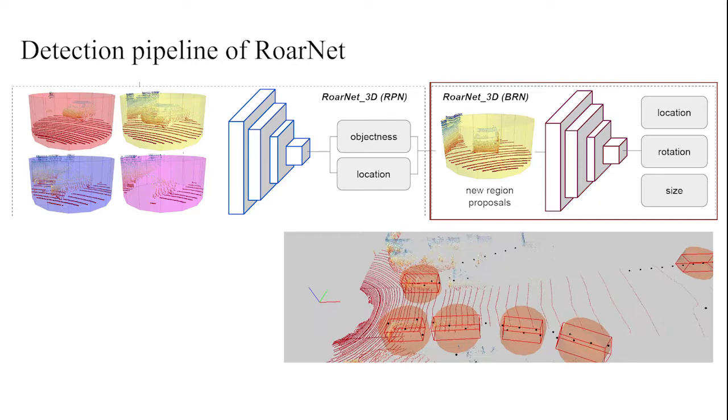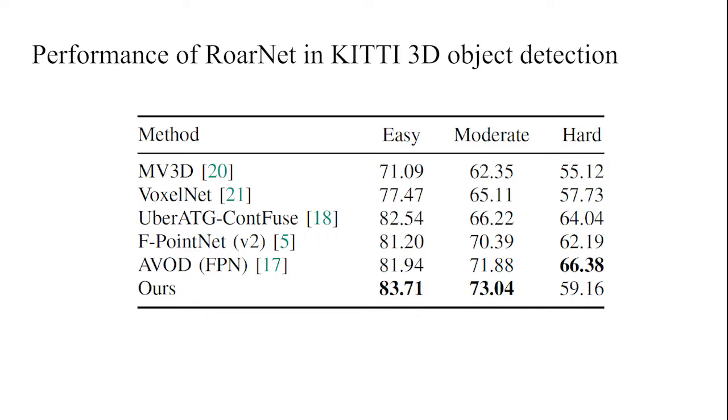Then, BRN predicts all coordinates required for 3D bounding box regression, including location, rotation, and size of object.